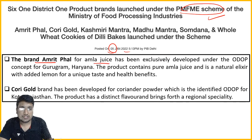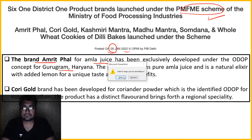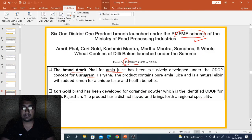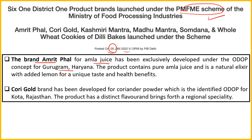Brand Amritphal is basically pure Amla Juice with added lemon - a brand developed in Gurugram, Haryana. Remember where it came from. Another brand, Corigold, has been developed with coriander powder from Kota, Rajasthan - basically a flavoring product.